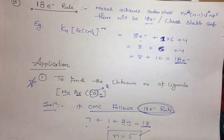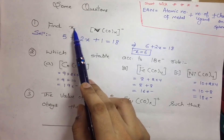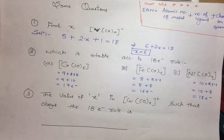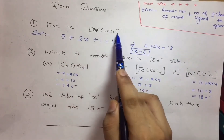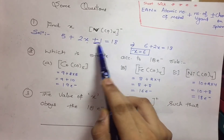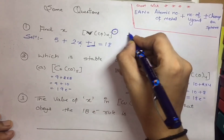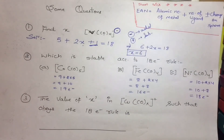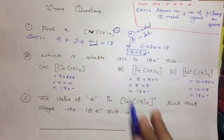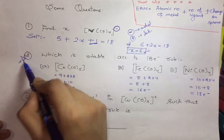Now we take some previous year and expected exam questions. First question: find the value of x (number of ligands) for vanadium with CO ligands. Vanadium's electron count plus x CO ligands (each contributing 2 electrons) plus 1 for the minus 1 charge (we add when negative) equals 18. Solving gives x = 6.